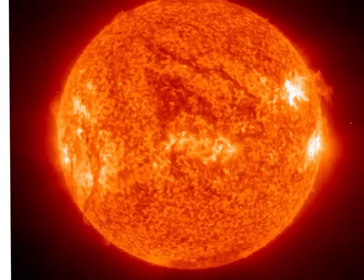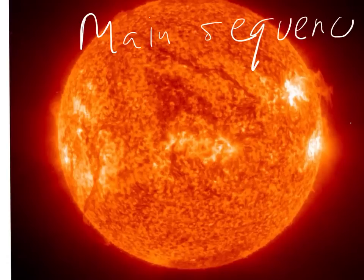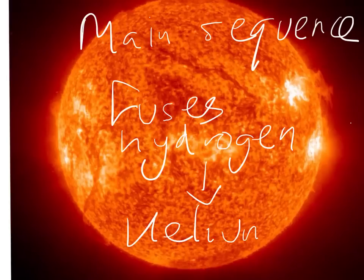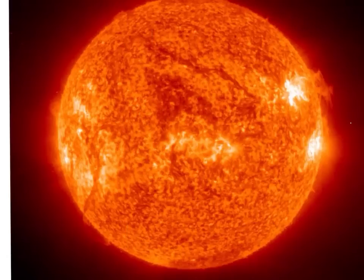This phase is now known as the main sequence for any average-sized star like our Sun. Our Sun is currently in the main sequence phase of its life. In the main sequence phase, it is burning or fusing hydrogen, and as it fuses hydrogen, it creates helium. Eventually, the hydrogen runs out, and when the hydrogen has run out, the star has no more fuel.